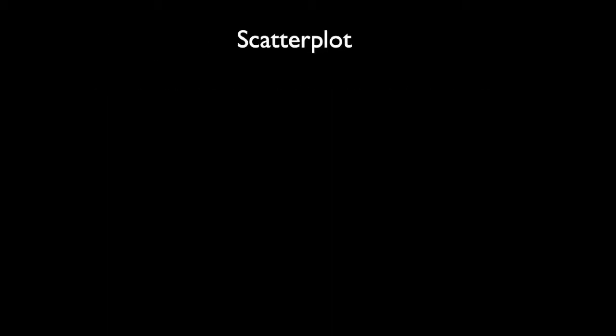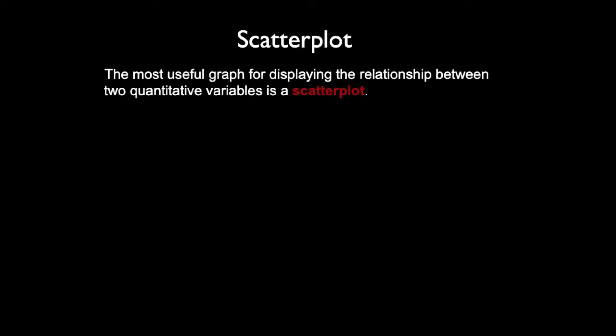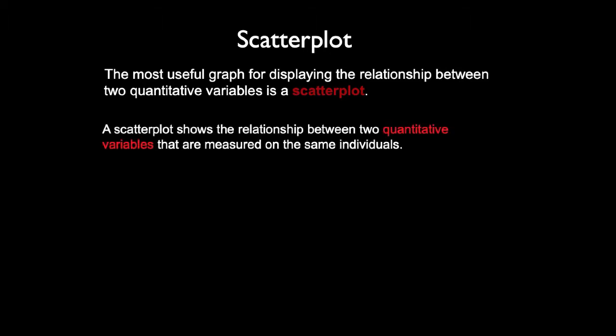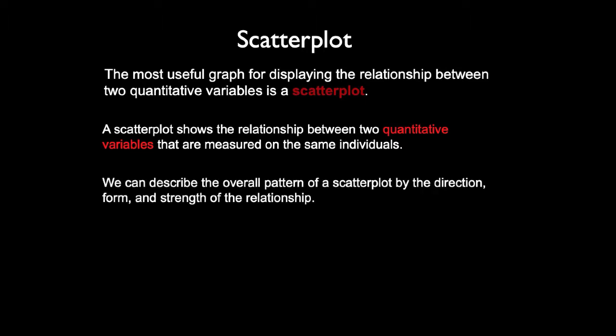Now, scatter plots. The most useful graph for displaying the relationship between two quantitative variables is a scatter plot. A scatter plot shows the relationship between two quantitative variables that are measured on the same individuals. We can describe the overall pattern of a scatter plot by the direction, form, and strength of the relationship.